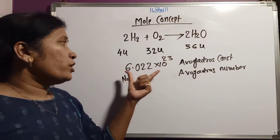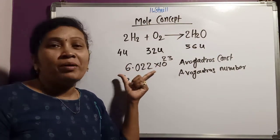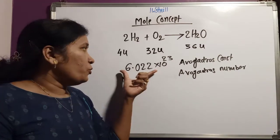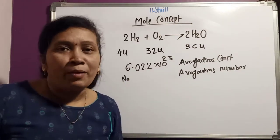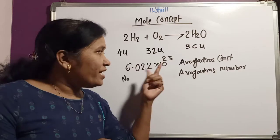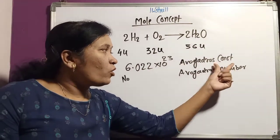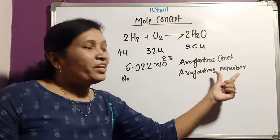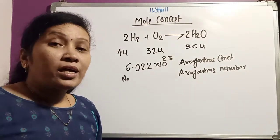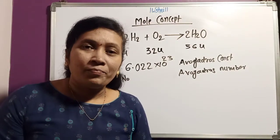This number is actually due to the Italian scientist Amedeo Avogadro. That is why it is named Avogadro's constant or Avogadro's number. It is also called Avogadro's number.